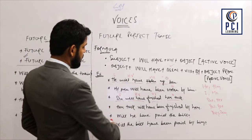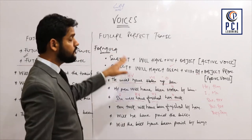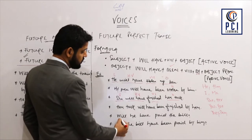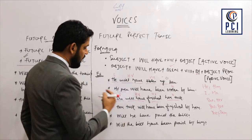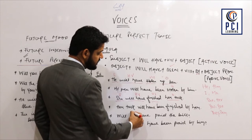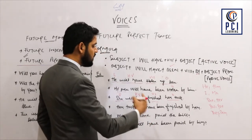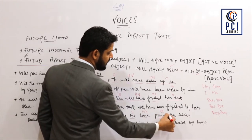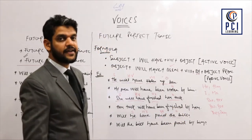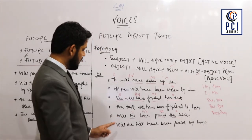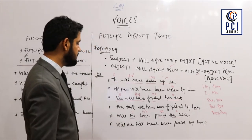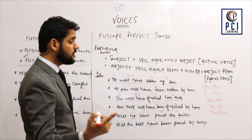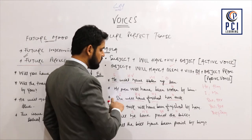Moving towards the next example: 'Will he have paid the bill?' — that's an interrogative of future perfect tense, meaning 'kia woh bill jama kar chuka hooga?' Here 'he' is the subject, 'will have' is the helping verb, 'paid' is the third form, and 'the bill' is the object. In passive voice, 'will' stays as is — just as in active voice.